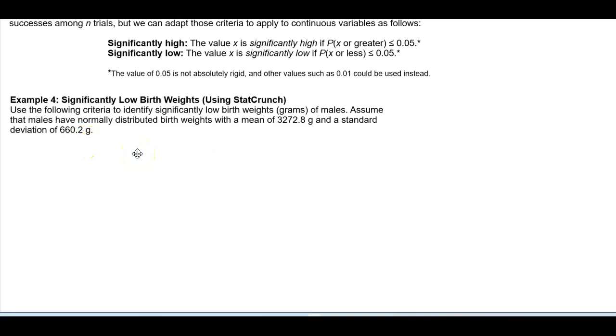So the first thing I want to do is draw our bell curve. So draw in our bell curve and then label the information given in the problem. So we do know what the mean is. So in the center of our bell curve we have the mean which is equal to 3,272.8 grams. So therefore this represents the X scale of grams.